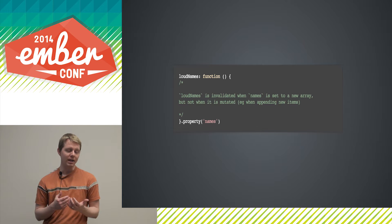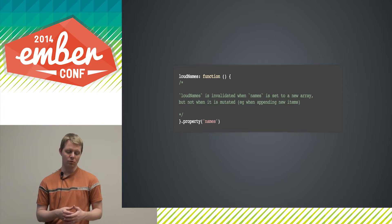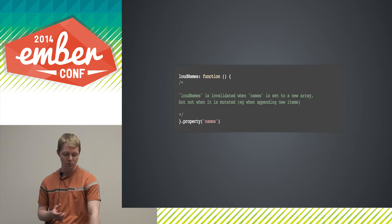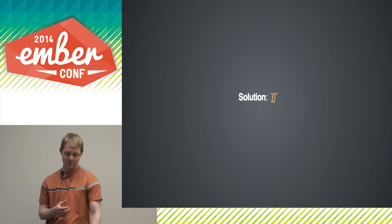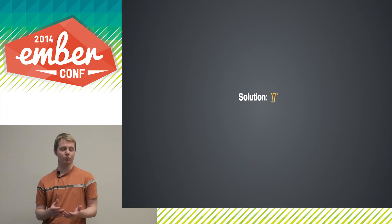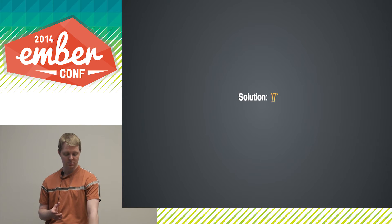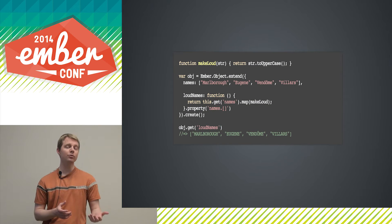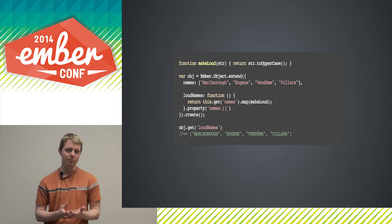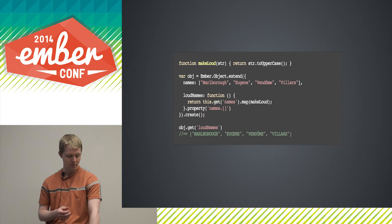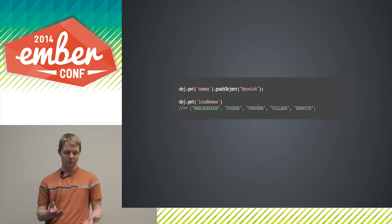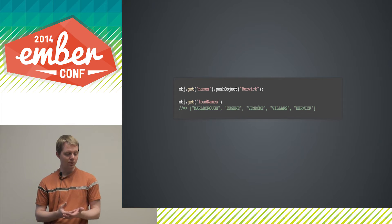Not when an item in the dependent array is replaced, added, or unshifted. There's a simple solution: a virtual computed property — brackety-bracket (i.e., `[]`). If we take almost the same example but now depend on names.[] instead of names, our test works. Now we can mutate the dependent array — we add Berwick and now we have this nice list of people.